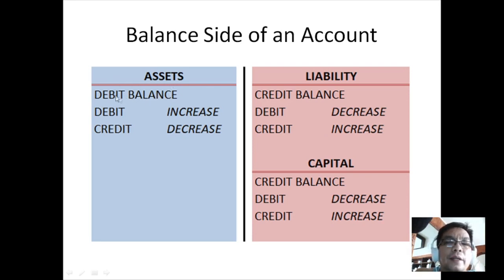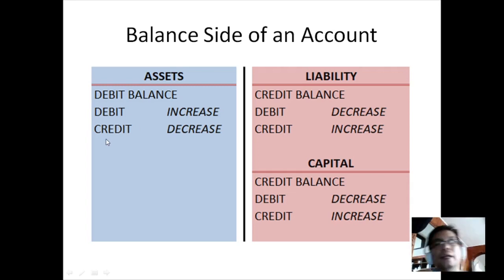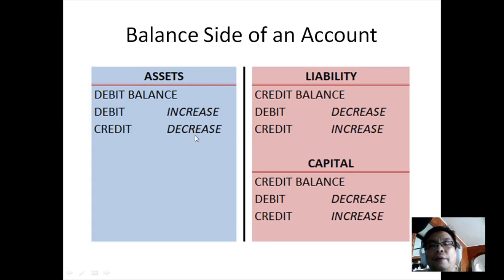For assets, the balance is on the debit side. That means if we debit an amount to an asset, that will increase the value of the asset, while if we credit an amount to an asset, that will decrease the value of the asset.